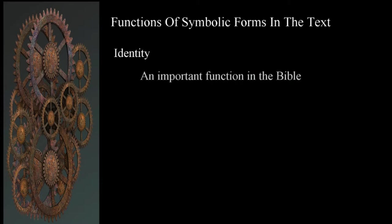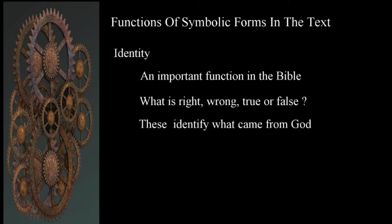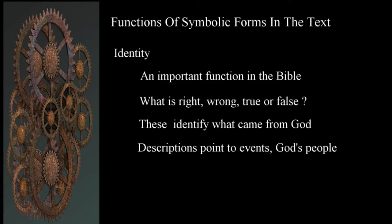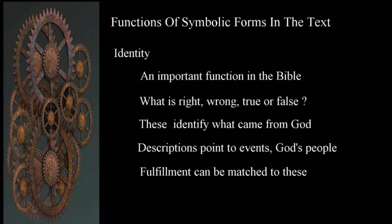Identity: this is an important function in regard to the Bible. How can we identify what's right, wrong, true, or false? Representative forms serve to provide a way to know what came from God. The way things are stated, what's being described, how something is described — the physical characteristics and other things reveal patterns that point to a specific event or identify followers of the Lord. When some things are promised or alluded to, their fulfillment can be identified by comparing the symbolic expression with the actual occurrence.